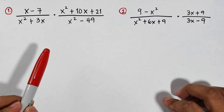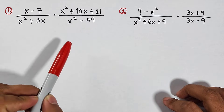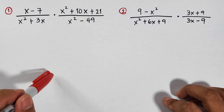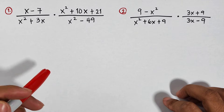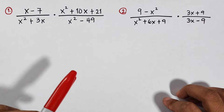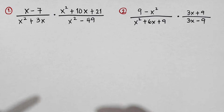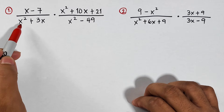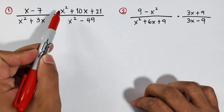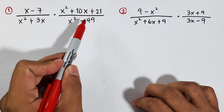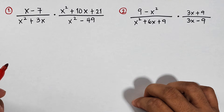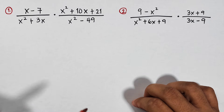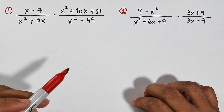Here, in our first two examples, we will focus first on multiplying rational expressions. The main thing here is for you to remember how to factor out polynomials, because that is the key on how to multiply and simplify these rational expressions. What we have here is x minus 7 over x squared plus 3x, times x squared plus 10x plus 21 over x squared minus 49. First thing we need to do before multiplying is we need to factor out the numerator and denominator of each rational expression.